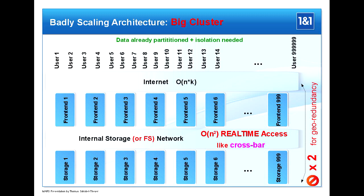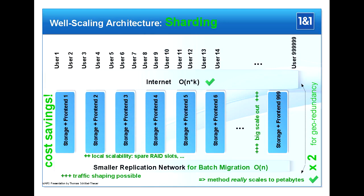You have an internal storage network, and the critical point is that each front-end server can potentially talk to any of the storage servers. That means O(n²) communication overhead, at least for keeping the TCP connections alive. This means you probably have problems with scalability, because it's a full mesh — like a crossbar.